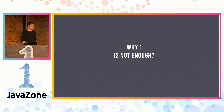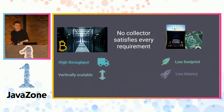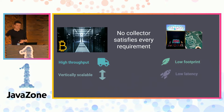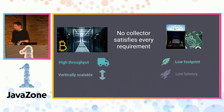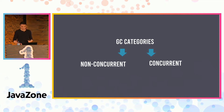Why is one Java, one garbage collector not enough? It would be easier for us, less complicated. Unfortunately, we have so many different applications — every application is unique. If you have a data center mining bitcoins, or if you develop the Pac-Man game we have here with Raspberry Pi, your requirements are completely different. We have two main categories of garbage collectors: non-concurrent and concurrent collectors.